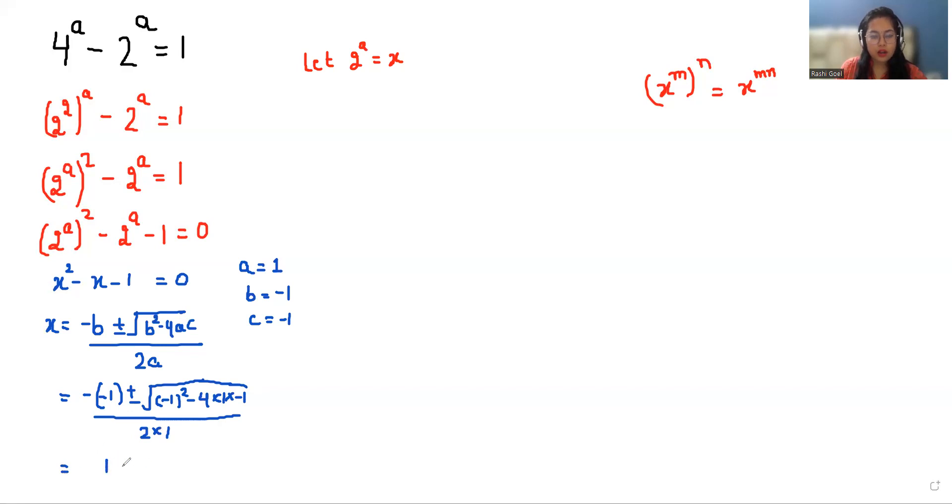So 1 plus 4 is 5. We get x = (1 ± √5) / 2, giving us two values of x: (1 + √5)/2 and (1 - √5)/2.